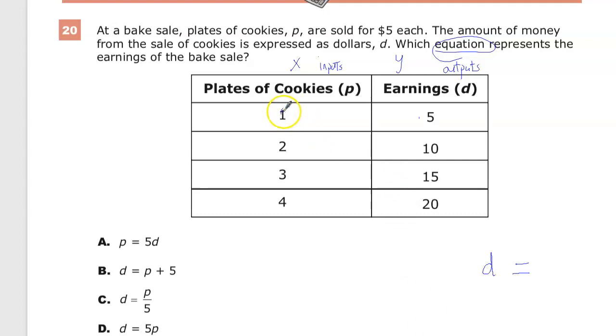If I have one plate of cookies at $5, I do 1 times 5, and I get 5. If I do 2 plates of cookies, 2 times 5 is 10, 3 times 5 is 15. That's the relationship.